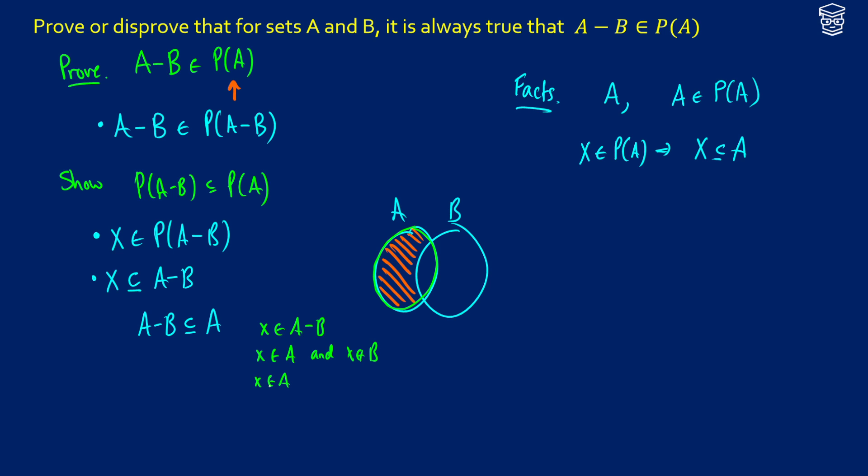Okay, so now that A minus B is a subset of A, this means that X, try to use the same color here consistently, that X is therefore going to be a subset of A. And if X is a subset of A, what does that mean? That means that X is going to be an element of the power set of A.